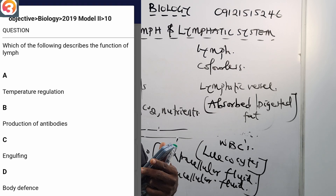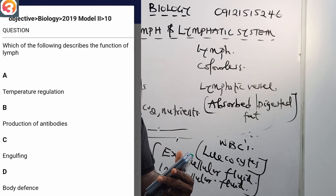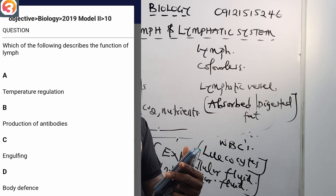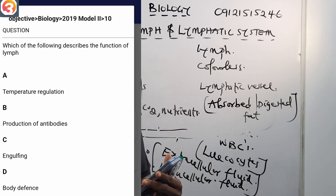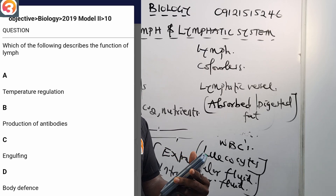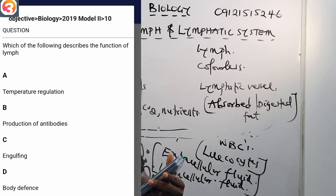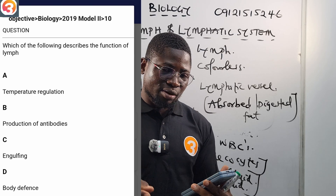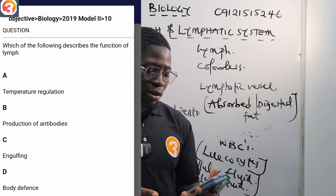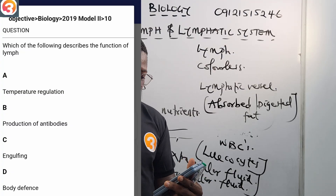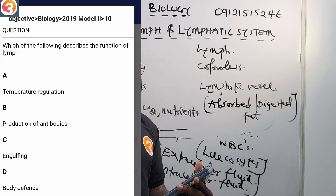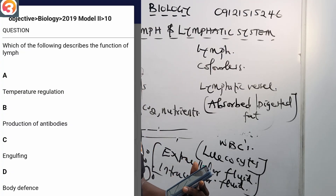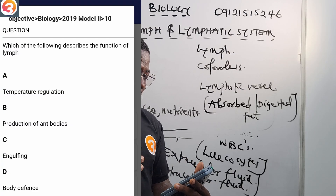2019 number 10: which of the following describes the function of the lymph? A: temperature regulation — no. B: production of antibodies — yes. C: engulfing. D: body defense. The answer is B — production of antibodies. That is one of the major functions of the lymph, along with transport of absorbed or digested fats.